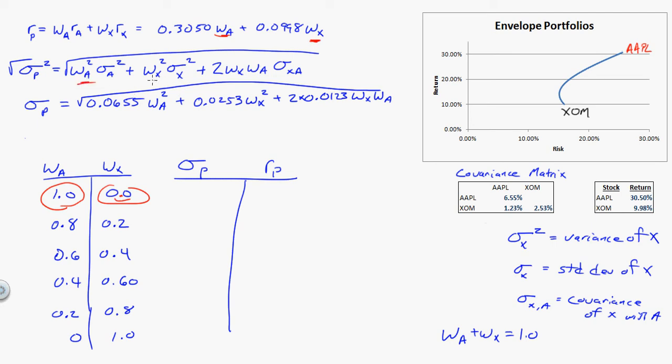And same thing—just substitute in at each point, and that's going to give me a return for the portfolio, it's going to give me a volatility for the portfolio, and I'll just have a dot there. However many dots I have—one, two, three, four, five, six dots—so I just connect those dots. The more dots the better, right?